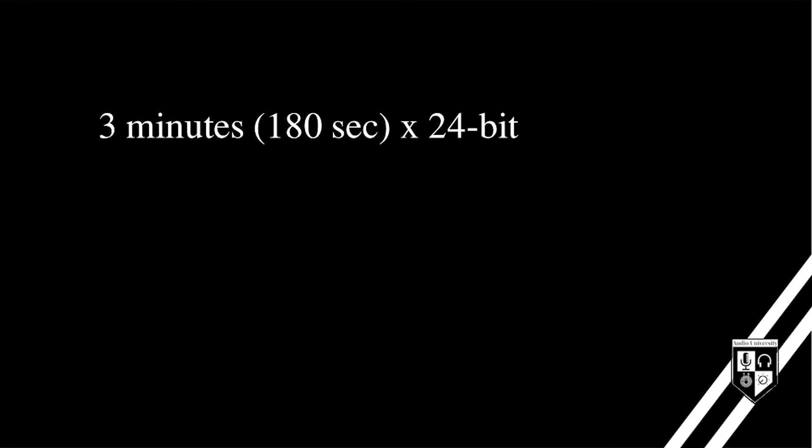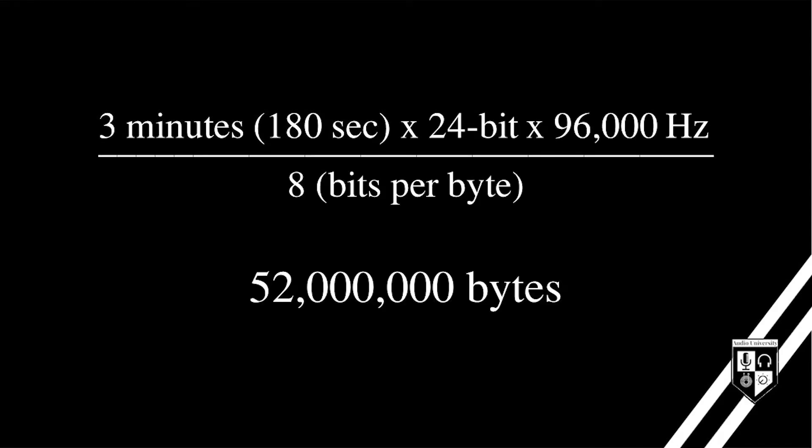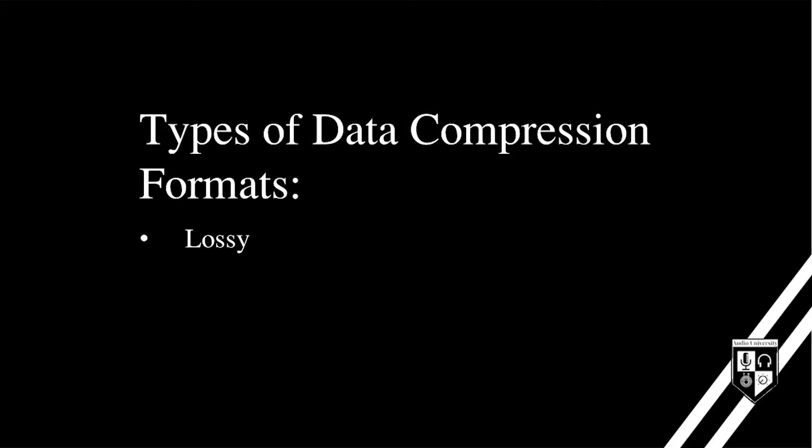The audio files created by studios are very large. A three-minute recording created with 24-bit and 96 kilohertz sample rate would be about 52 megabytes. This is just too big to be practical for consumer uses such as streaming, and for that reason we use data compression. There are two types of data compression: lossy and lossless. If information is lost during the compression, a lossy format is used.